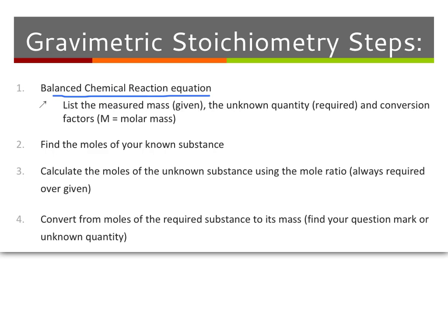Underneath that balanced chemical reaction, I would suggest you list what you know and what you don't know. That means you're listing your measured mass that's given, putting down your question mark to show what unknown quantity is required, and putting down your conversion factors — that means writing down what your molar masses are for both your known and your unknown.